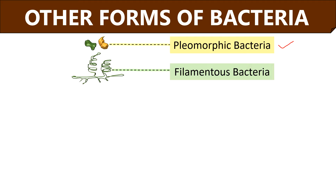Mycoplasma species like Mycoplasma pneumoniae and Mycoplasma genitalium are a few examples of pleomorphic bacteria. Filamentous bacteria have a long tubular shape and sometimes they appear branched, which resembles the filamentous structure of fungi. Sphaerotilus species and Nocardia amarae are examples of filamentous bacteria.